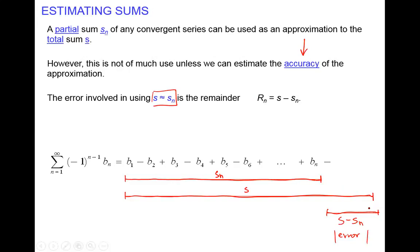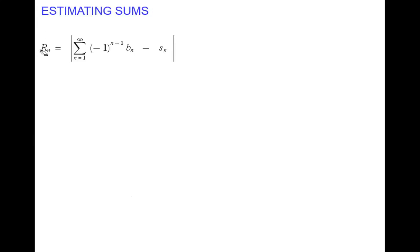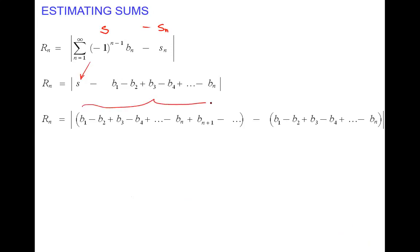We have to estimate the magnitude — how big or how small is this error. The error will be defined as the entire sum minus the partial sum. The partial sum S sub n means all of the terms adding up to B sub n. This represents the entire sum S. And in expanded form, the entire sum S minus the partial sum adding n terms gives us the error.